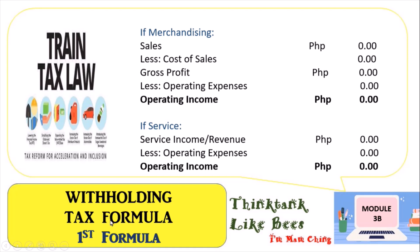If the business is a merchandising business, you need to use this income statement: we have the sales plus the cost of sales which equals the gross profit, then you deduct the operating expenses to get your operating income. If it's a service business, then you have the service income or revenue, then you deduct the operating expenses to get the operating income.